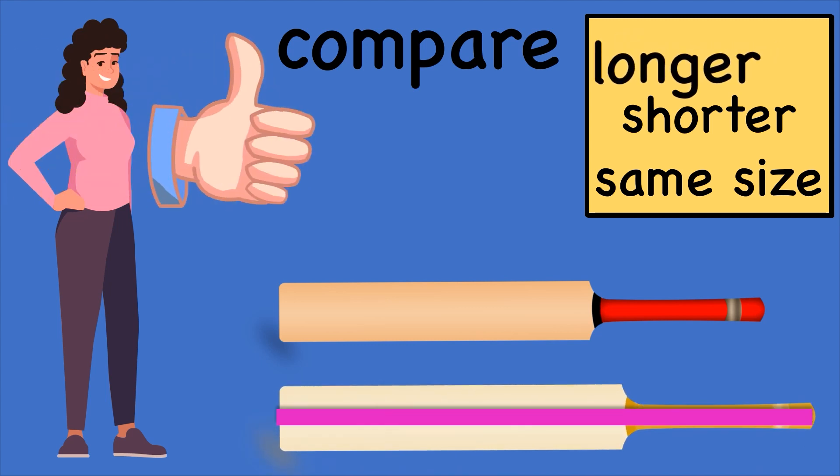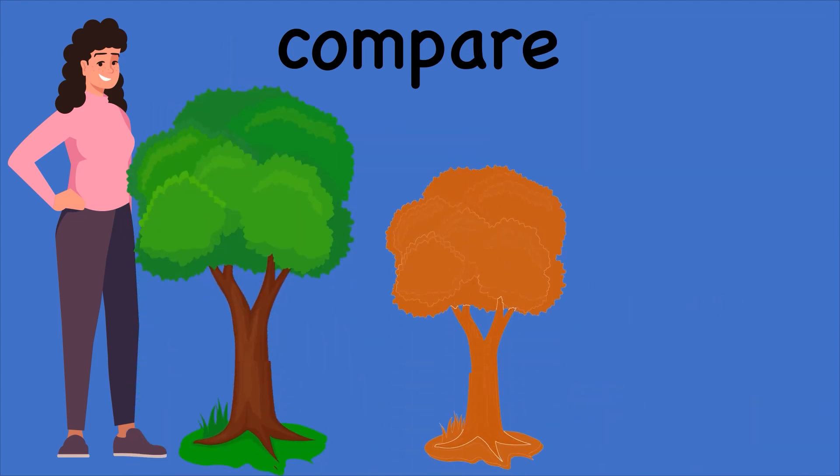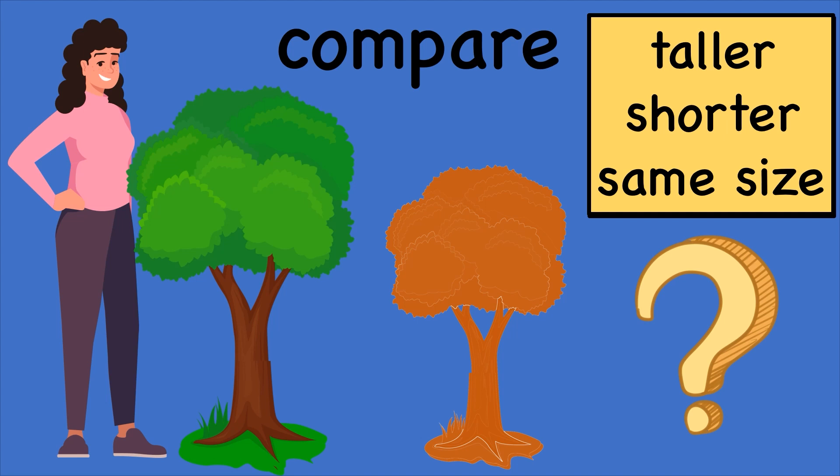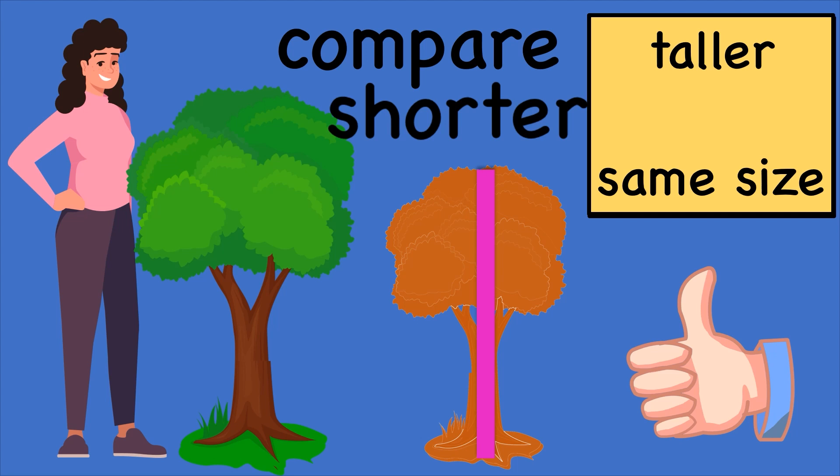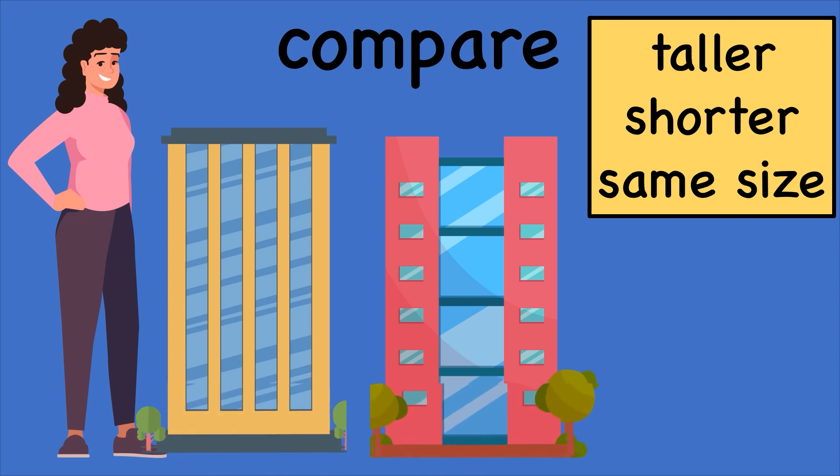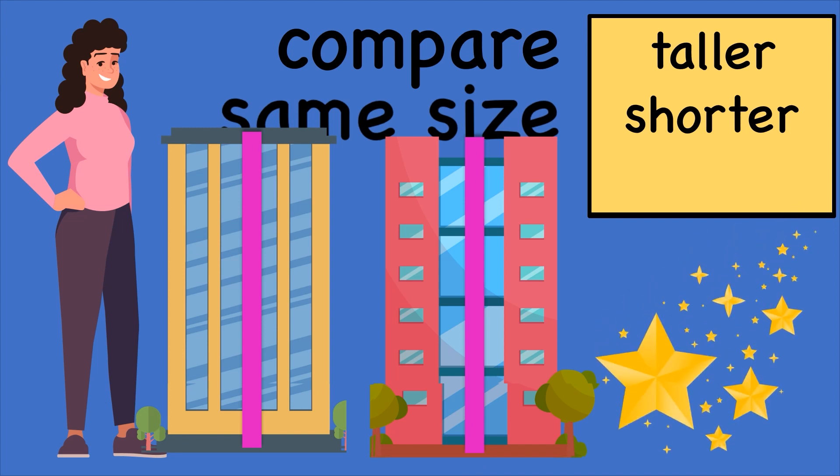What about these trees? Here are the ends of the trees which are already lined up. Is the red tree taller, shorter, or of the same size? What do you think? Yes, the red one is shorter. And what about these buildings? Here are the ends of the buildings which are already lined up for you. And both are of the same size. Awesome! You did a great job.